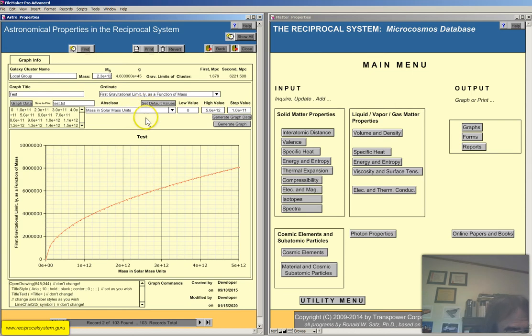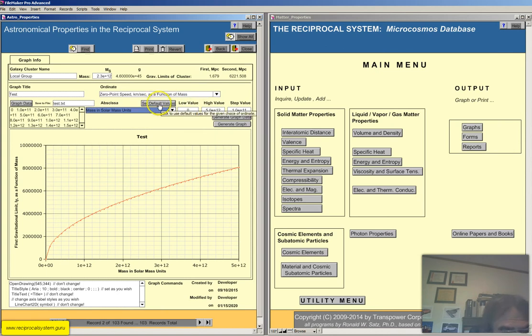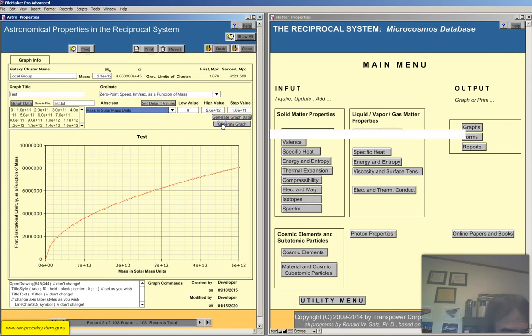Normally you'll just click on set default values. So if I look here, let's look at the first one. We'll go through all these quickly. Zero point speed kilometers per second is a function of mass. And we can plot this versus mass in solar mass units, distances in terms of prescriptives on light years distance in megaparsecs. So I'm going to set the default values, and then generate the graph data, and then generate the graph. So here's the graph. So this is the zero point speed.